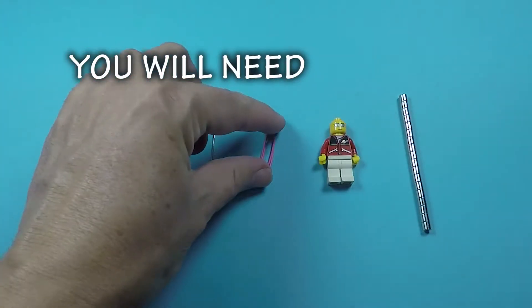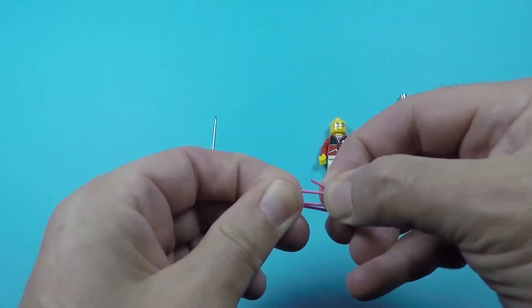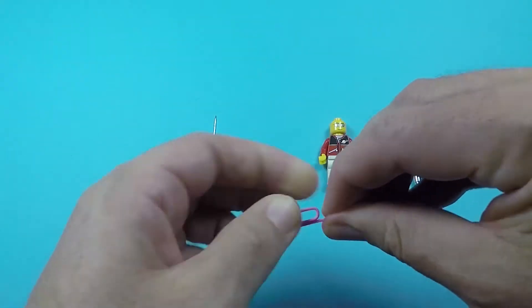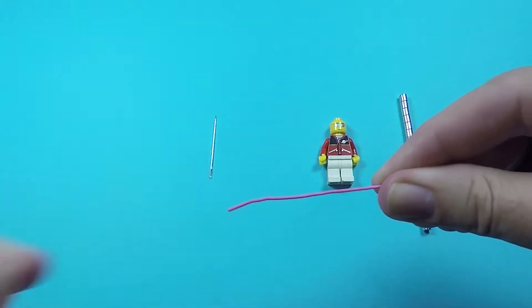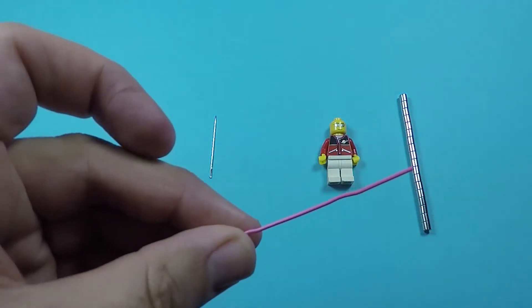So what you'll need to make your Lego minifigure compass is a steel paperclip or a needle, a minifigure and a magnet. I'm going to use the paperclip. You just have to straighten it out and get it as straight as possible.